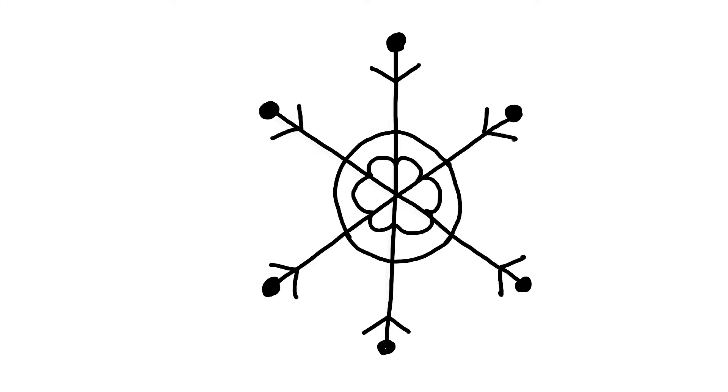Snowflake number six is the fanciest of them all. Start with six intersecting lines. Draw little v's towards the edge and then finish off with a circle. Now draw a larger circle towards the center.